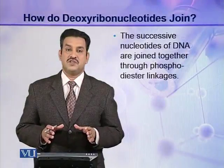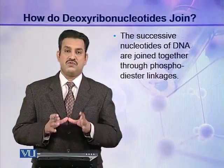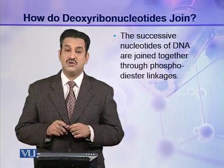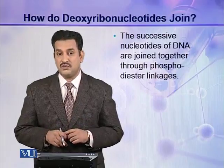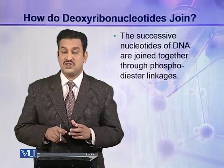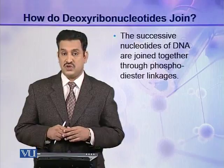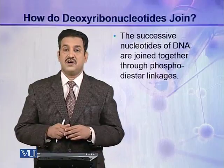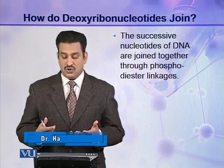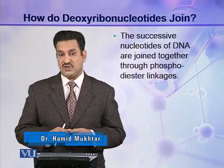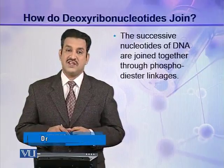As you have seen, a nucleotide is made up of three components, but a DNA molecule is a polymer of these deoxyribonucleotides. The next question arises: how are different deoxyribonucleotides joined together to make a polymer of DNA — a polynucleotide? The successive nucleotides of DNA are joined together through phosphodiester linkage.